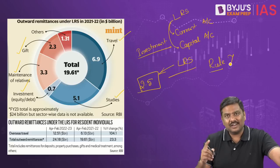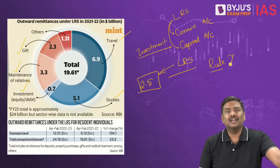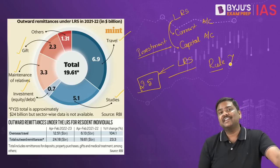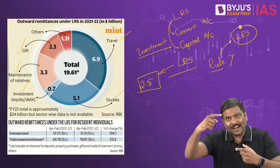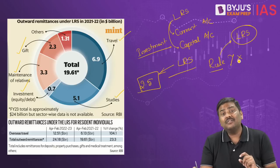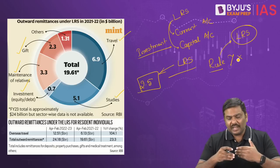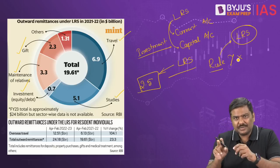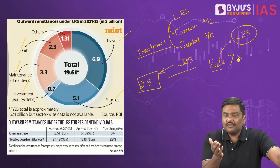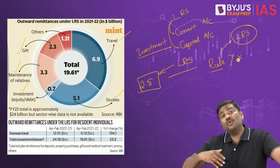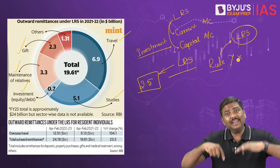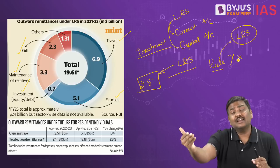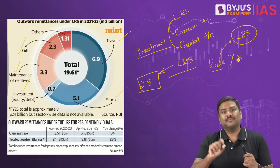There was a Rule 7 under FEMA which has now been recalled by the government. Rule 7 basically stated that credit card transactions will not be covered under LRS. Because of this, many international credit card issuers issued credit cards with a limit of more than $2.5 lakh. As a result, a lot of dollar transactions by Indians were taking place outside India but not getting reported under LRS.